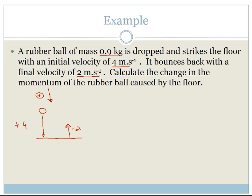So we go delta P is equal to M VF minus VI. Okay. So now we can substitute in our numbers. So we can say 0.9.